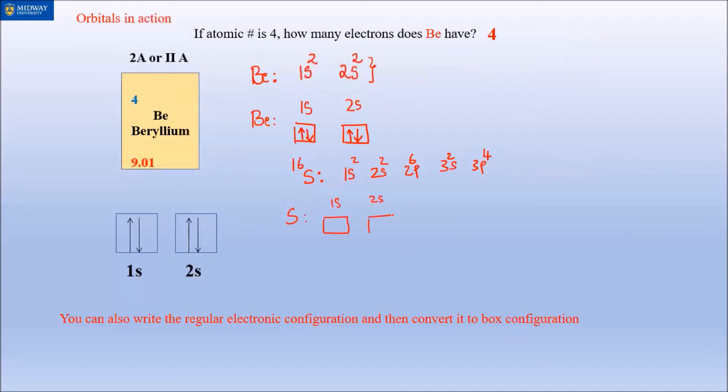Now we can write the boxes. 1s - I'm going to draw one box. 2s - one box. 2p - well, P is three, so draw three shells, one, two, three. 3s - one box. 3p - it's P, so draw three shells.